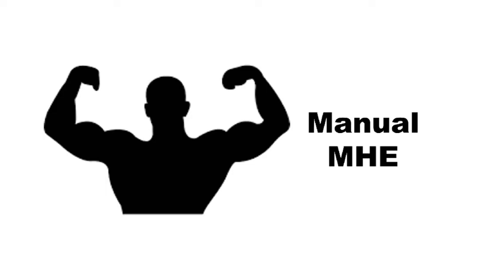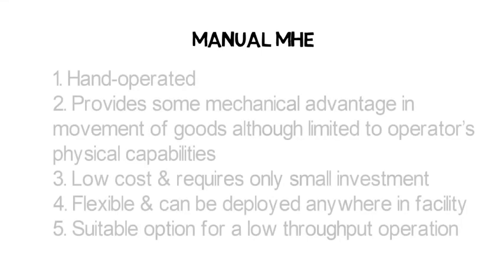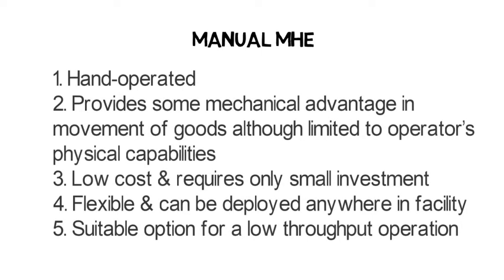The many varieties of MHE are generally differentiated by the extent that manual power is required to operate them. Manual MHE are hand-operated, although most are designed to provide some mechanical advantage in the movement of goods. However, this is entirely limited to the operator's physical capabilities. They are low cost, require only small investments for purchase, are often quite small in size, flexible, and can be deployed anywhere. They are a suitable option for a very low-throughput operation.